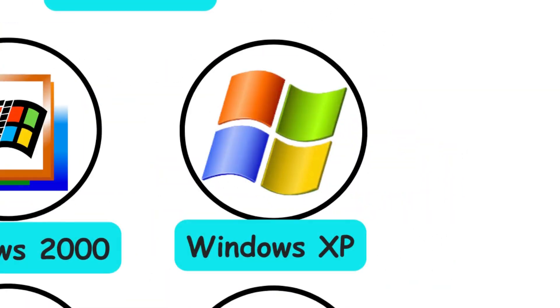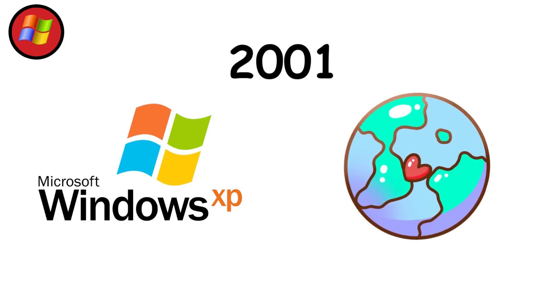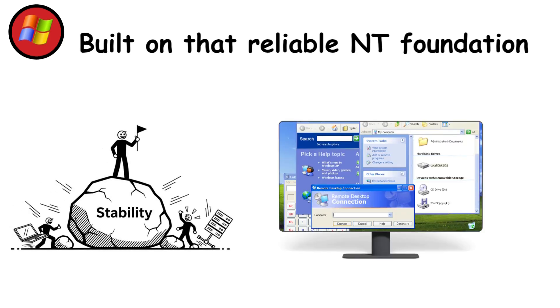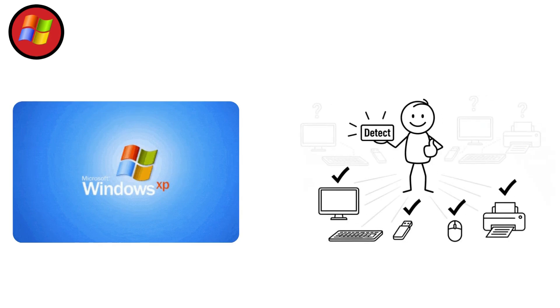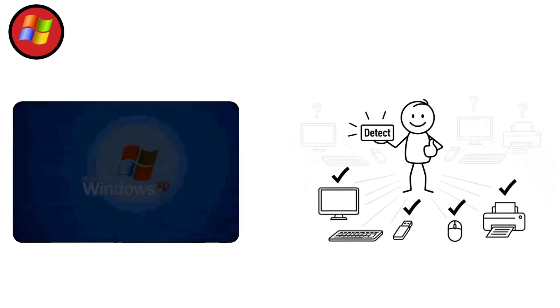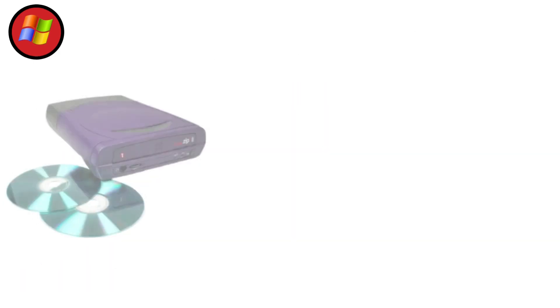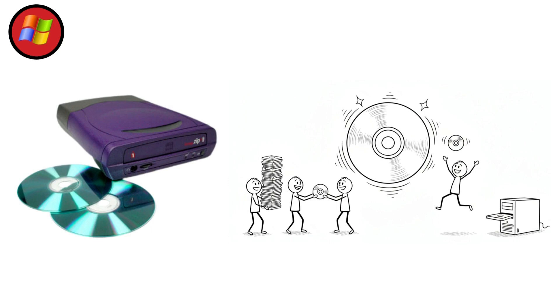Windows XP, 2001. Windows XP arrived in 2001 and captured hearts worldwide. Built on that reliable NT foundation, it combined rock-solid stability with a friendly, colorful interface. Boot times shortened dramatically, and hardware detection improved significantly — plugging in new devices rarely caused problems anymore. Features like fast user switching and the redesigned start menu made daily computing smoother. CD burning became built-in, perfect timing since CDs dominated file sharing.